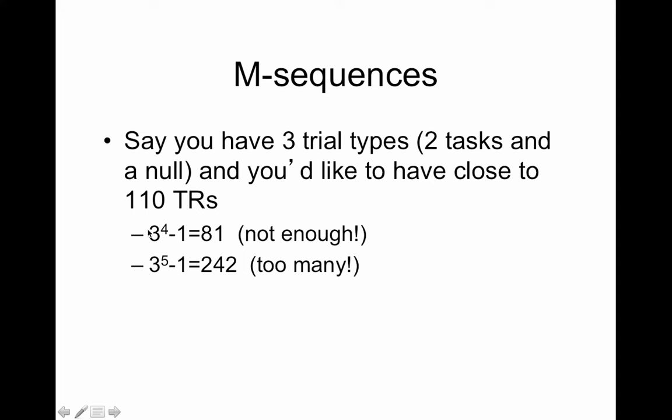For example, let's say you have three trial types, you have two tasks and a null, and you'd like to have it as close as you can to 110 TRs. Then you could have 3 to the 4th minus 1 which is 81 which is not enough, or 3 to the 5th minus 1 which is 242 which is too many. Now your run is too long. You can see m-sequences have some limitations and again they're optimizing estimation not detection.